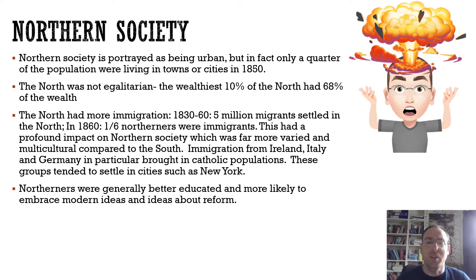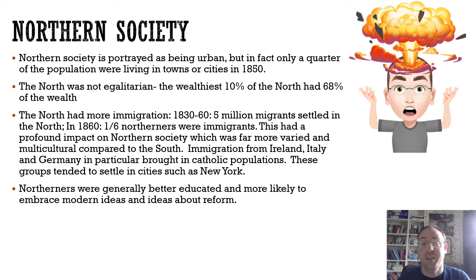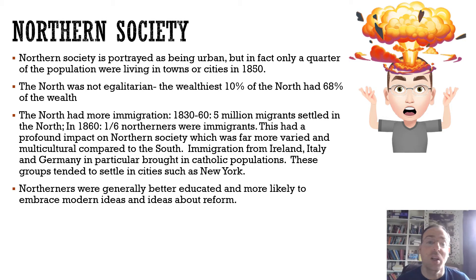What was northern society like? It's often portrayed as being really urbanised, but again this is a bit of an exaggeration. Only about a quarter of the population were living in towns or cities in 1850. It's sometimes said that the north was far more egalitarian than the south, and again that's not completely true. About 10% of the wealthiest northerners owned about 68-70% of the wealth.